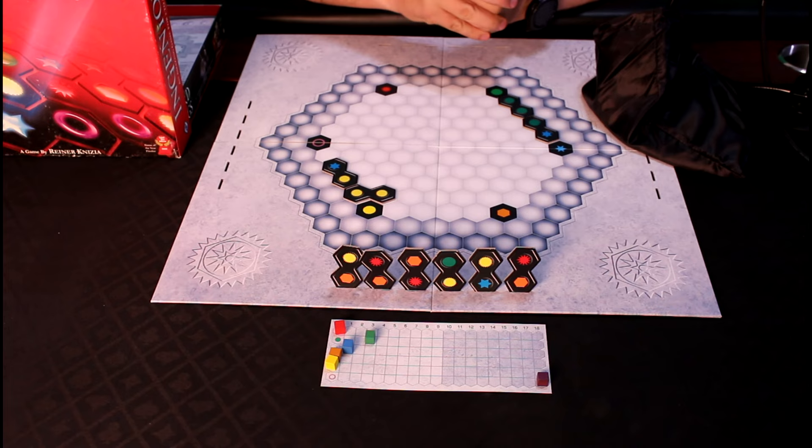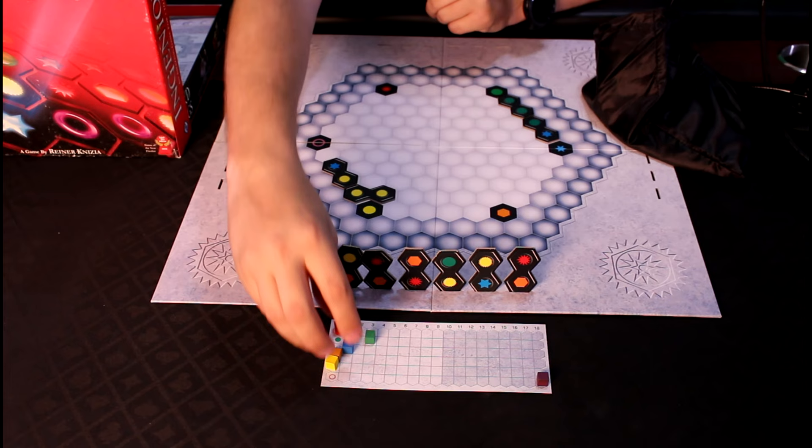If one of these score markers ever gets to the very end spot, the number 18, the player says, Ingenious, and they may take an additional turn.